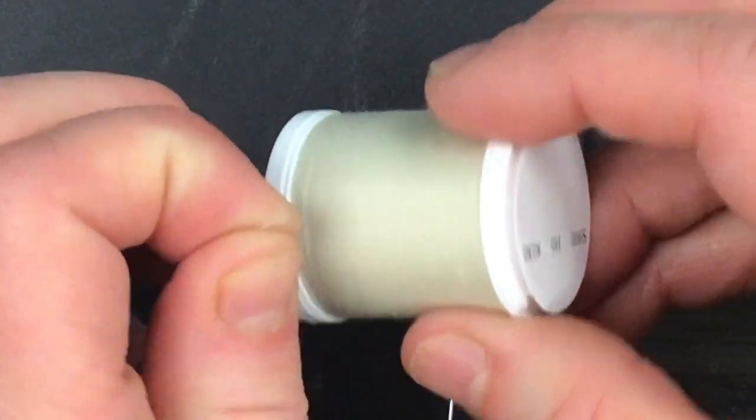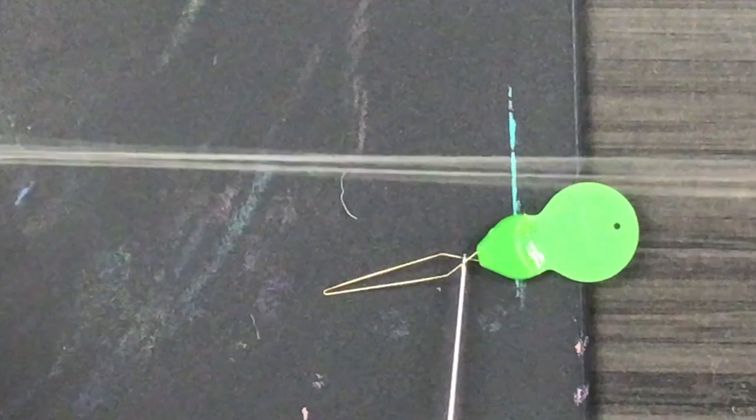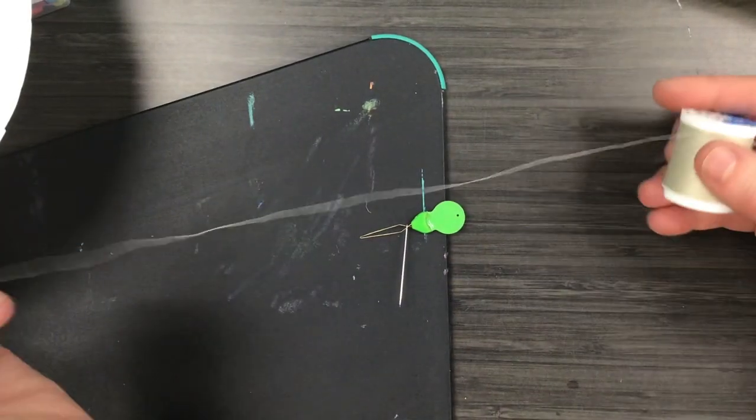Now I'm ready for my thread. I'm going to make sure that my thread is coming off. I just unwound it off the spool a little bit.